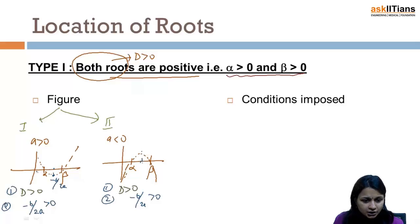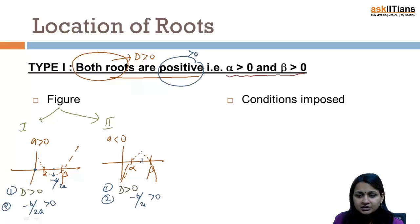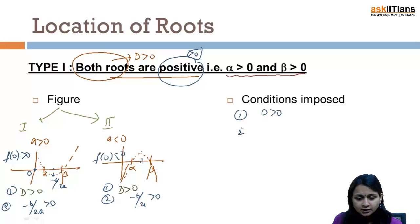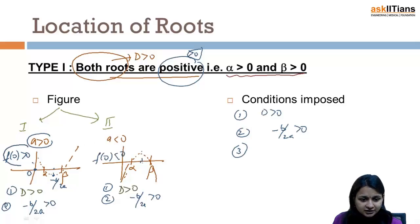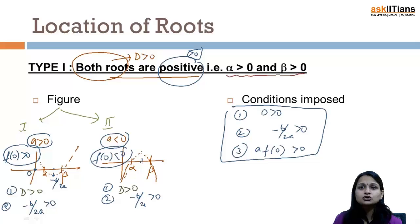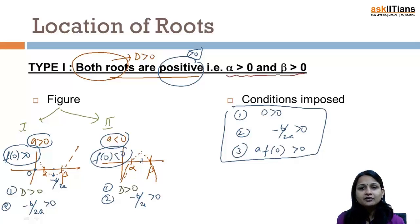Finally, we talk about the f(k) sign. The reference here is zero, since both roots are positive meaning greater than zero, so we talk about f(0). In the first case f(0) is positive, and in the second case f(0) is negative. To combine these two conditions: when a is greater than zero, f(0) is greater than zero; when a is less than zero, f(0) is less than zero. So we write: a times f(0) is greater than zero. With these three conditions applied, our question gives us the complete detail for when both roots are positive.